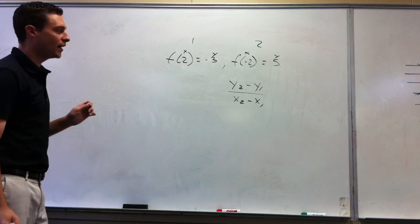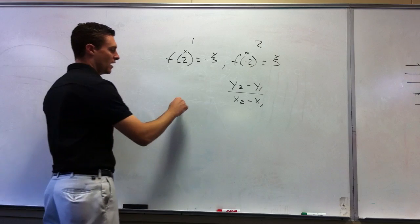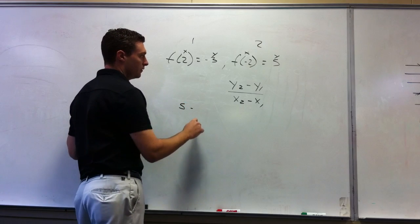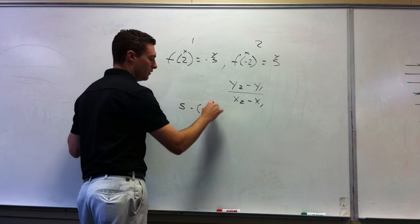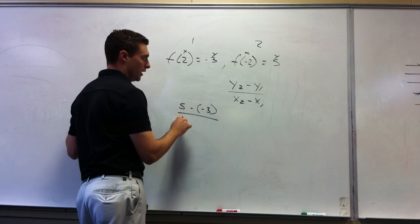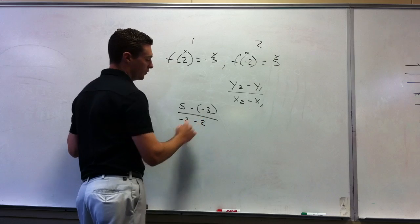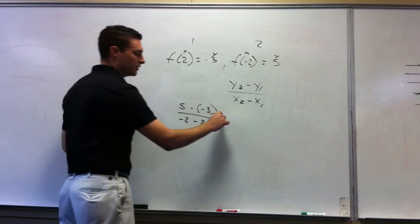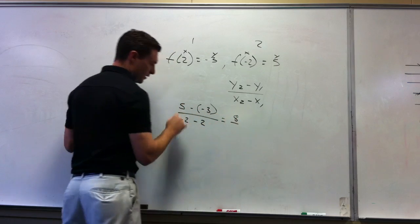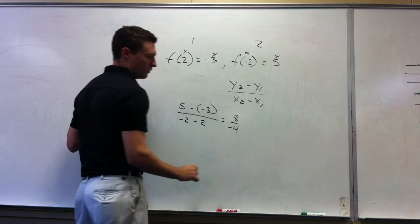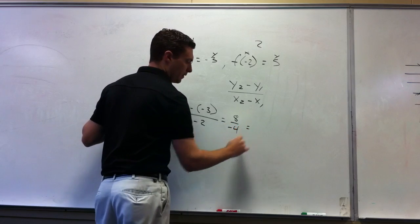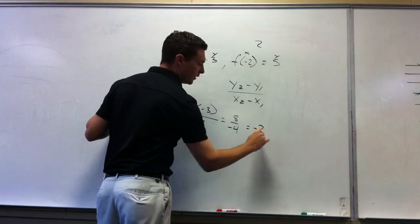5. 5 minus negative 3 over x2 would be negative 2 minus 2. So simplify. 5 minus negative 3 is 8. 8 over negative 4 equals negative 2.